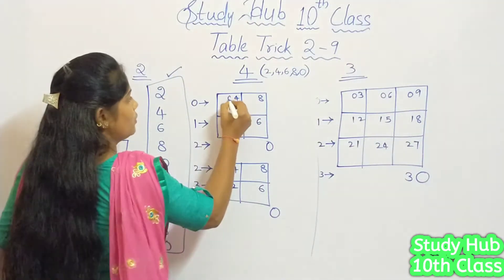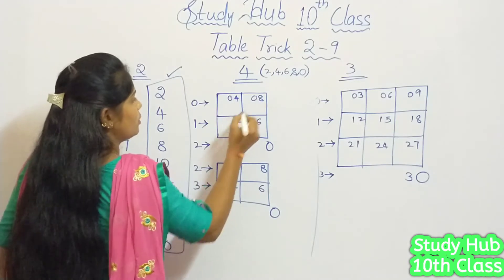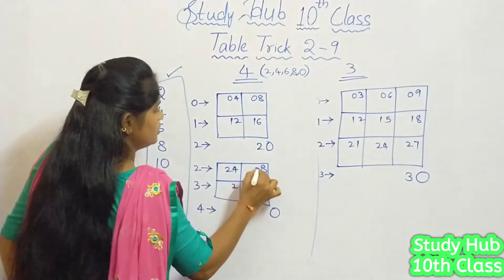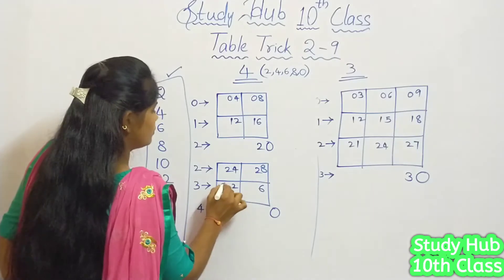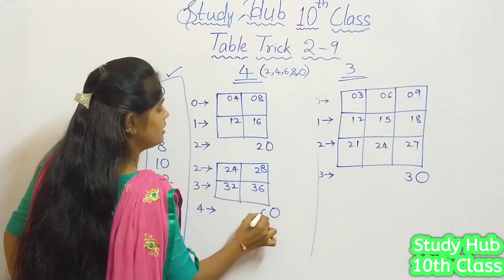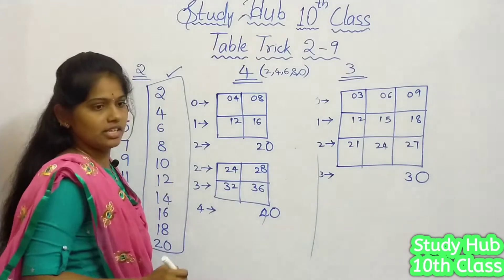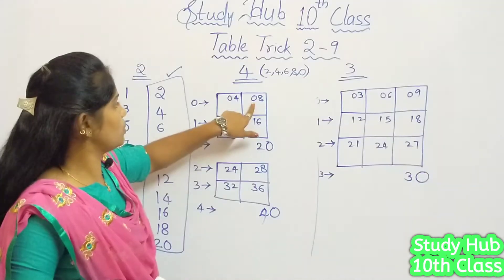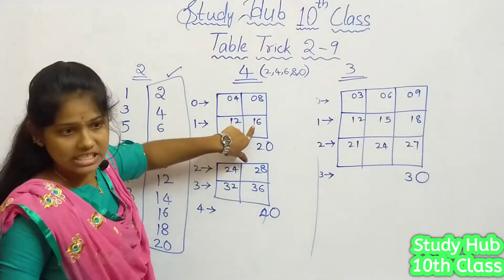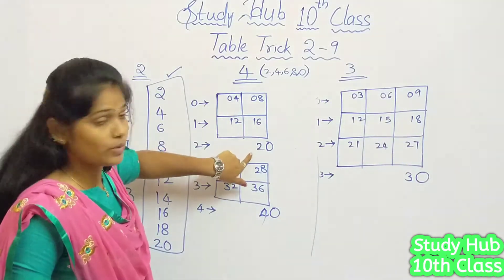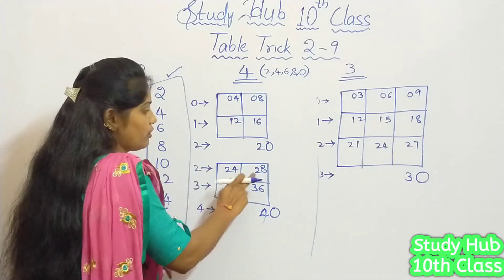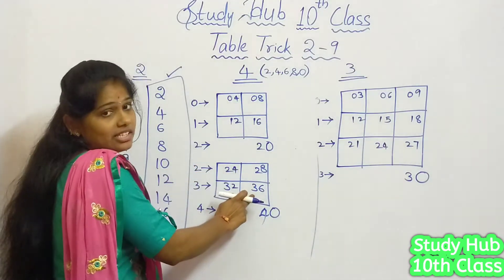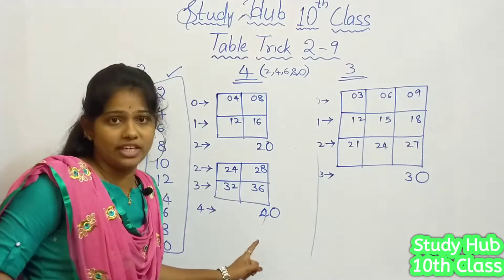Let's substitute: 0, 0 for the first row; 1, 1 for the second; 2, 2 for the third; 2, 2 continuing; then 3, 3 and 4. So we get: 4 ones are 4, 4 twos are 8, 4 threes are 12, 4 fours are 16, 4 fives are 20, 4 sixes are 24, 4 sevens are 28, 4 eights are 32, 4 nines are 36, and finally 4 tens are 40.